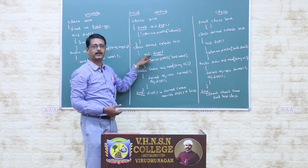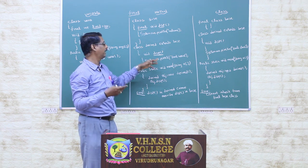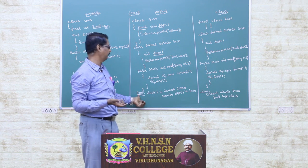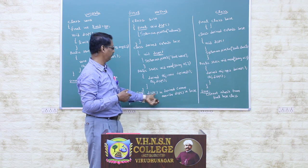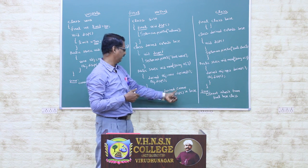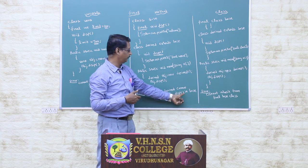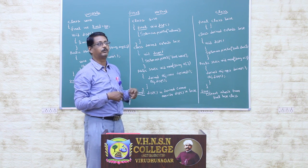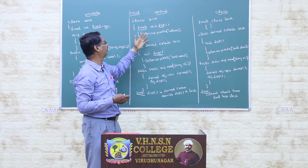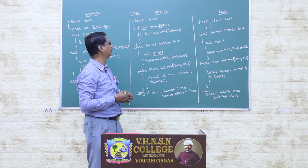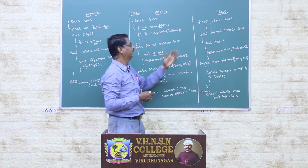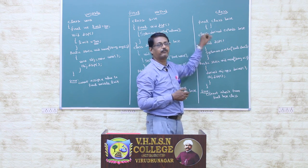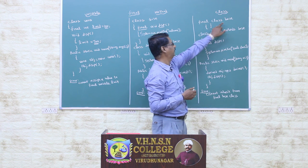You cannot override a final method in a derived class. This will result in a compile error. So the final method cannot be overridden — that is what the final method does.